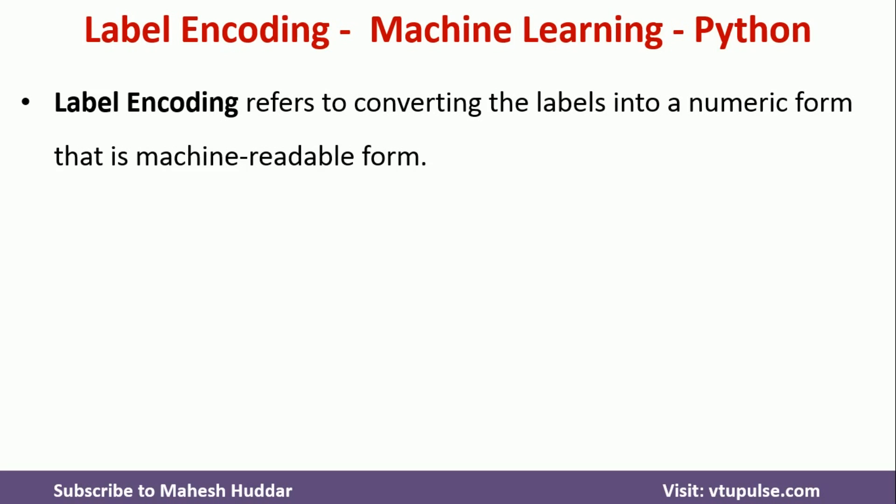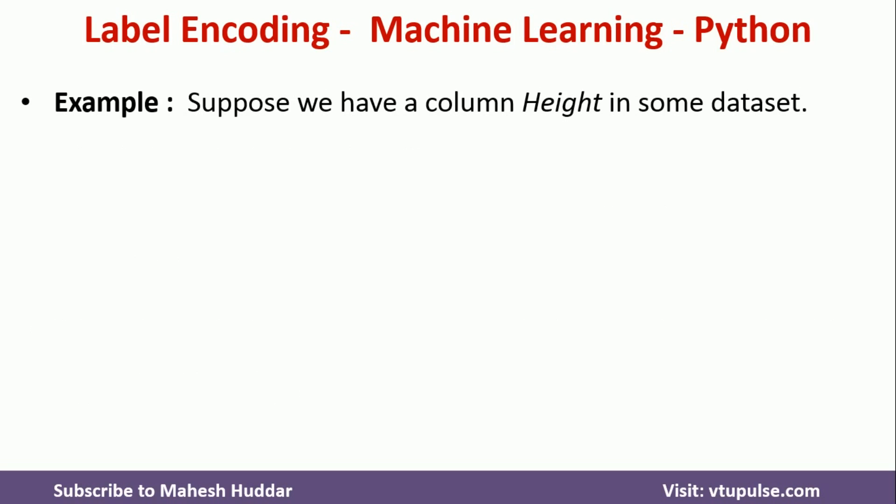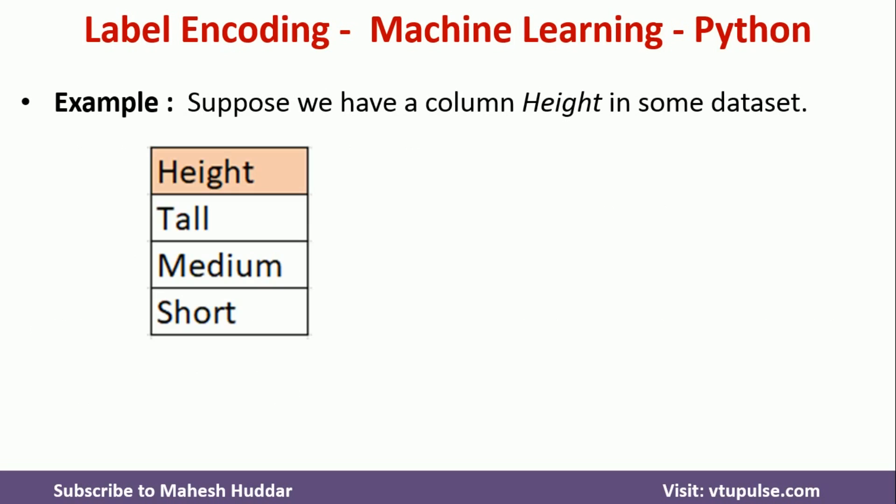So what we do is perform something called label encoding. What label encoding does is convert the labels into a numeric form so that the machine learning algorithm can easily understand that data. Label encoding is one of the very important pre-processing steps in any supervised machine learning technique. For example, let's say there is a dataset containing height as one column with values like tall, medium, and short.